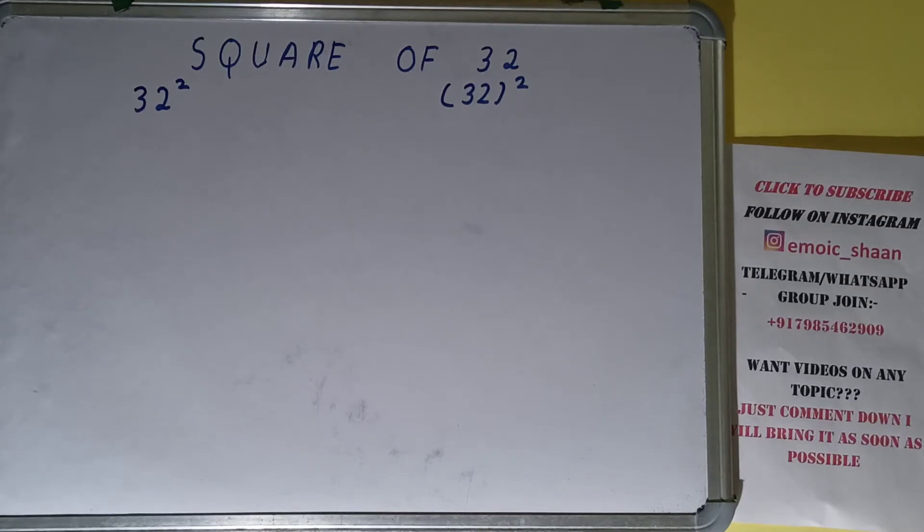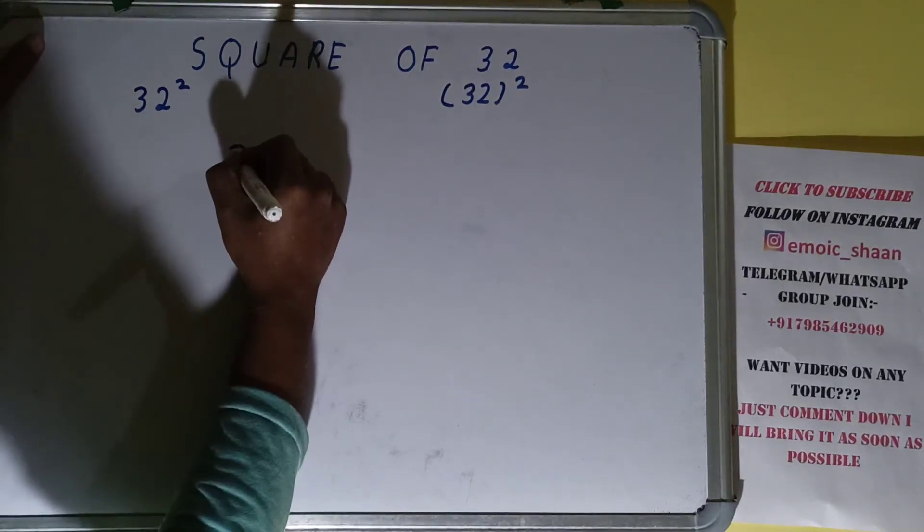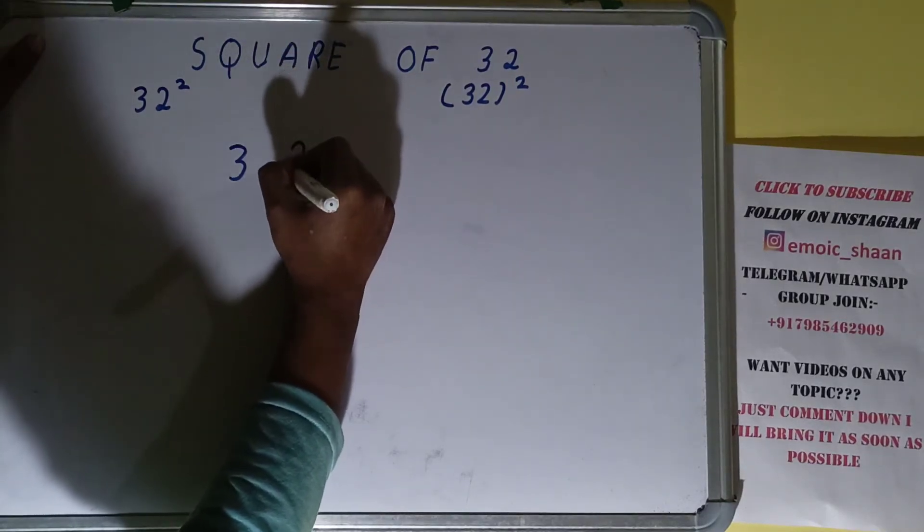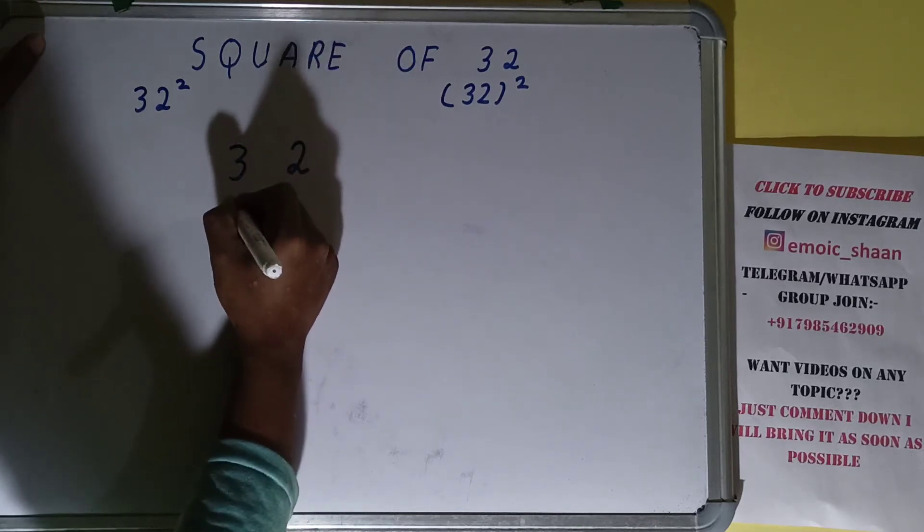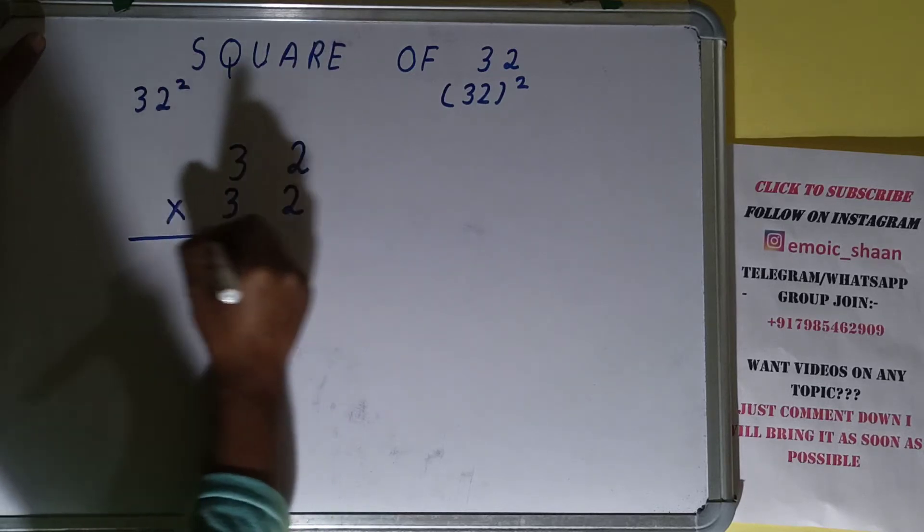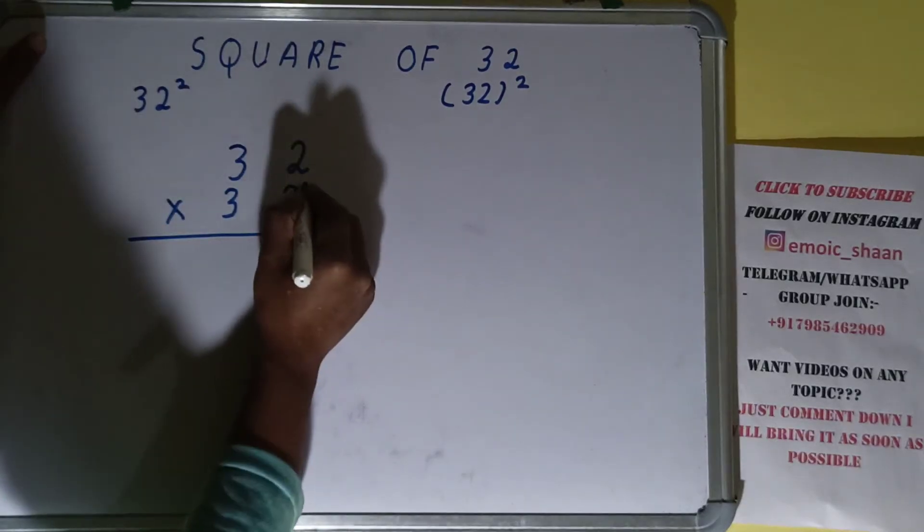Square means nothing - it basically means multiplying the number by itself, and the number is 32. So to find square of it, we need to multiply it by itself. Let's multiply and let's start.